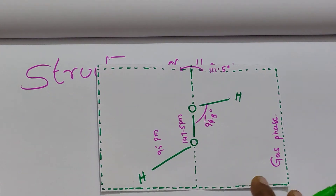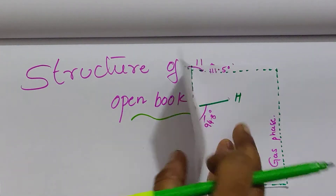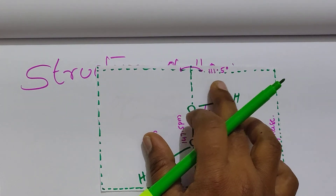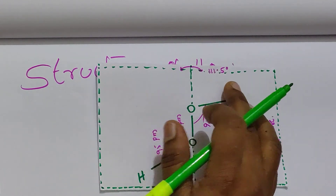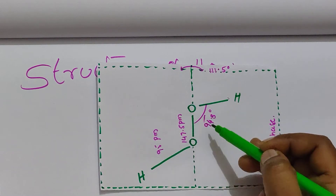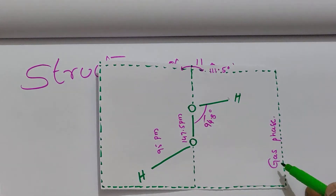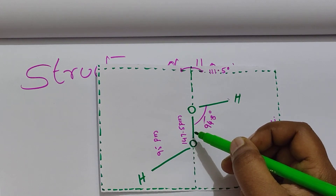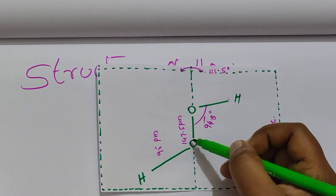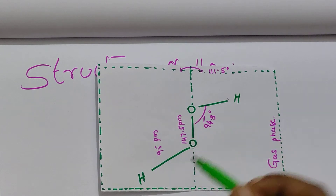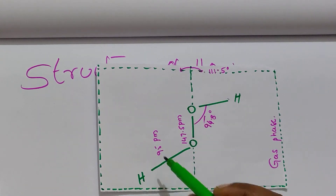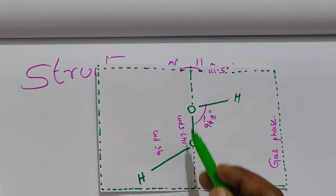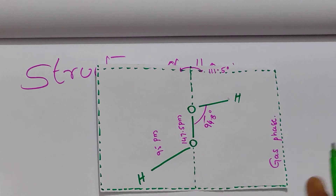In the gas phase, the folding angle of the book is 111.5 degrees. The O-O-H bond angle is 94.8 degrees. The O-O bond length is 147.5 picometers, and the O-H bond length is 95 picometers in the gas phase. The bond angles and bond lengths are like this in the gaseous phase.